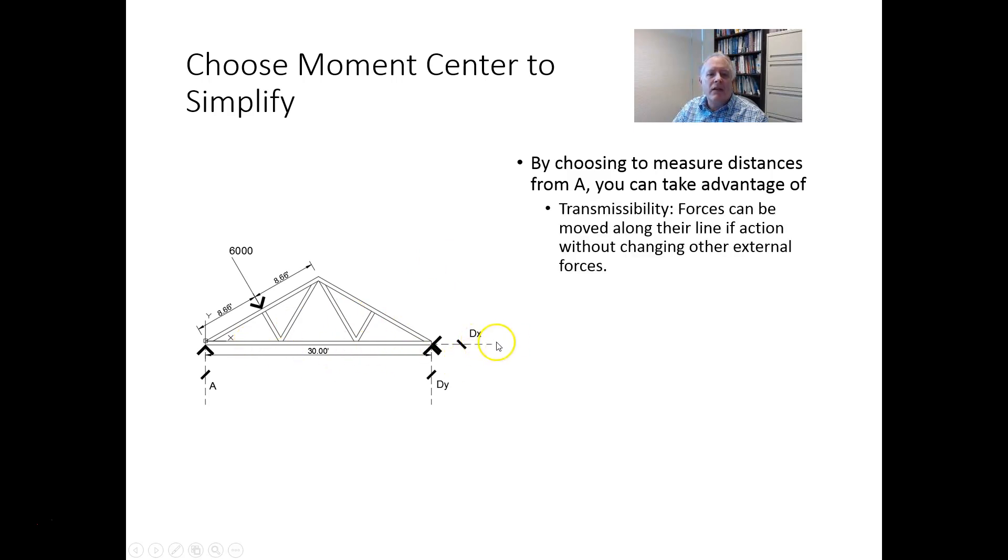Because Dx runs through, the line of action of Dx runs through point A. And since we can move that force to point A by just going straight along it, we don't need to think about that because there's zero distance from point A. So even though it's 30 feet away from point A, that distance is not the perpendicular distance. The perpendicular distance between the line of action of D and point A is zero. Forces whose lines of action run through the point have no moment about that point.